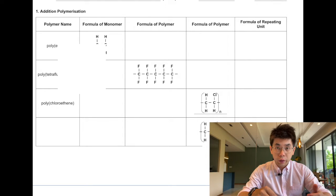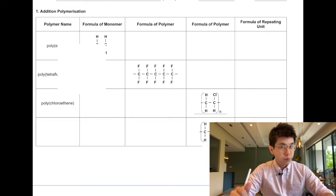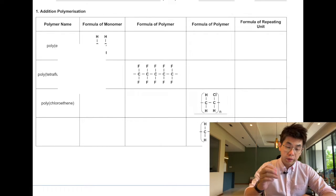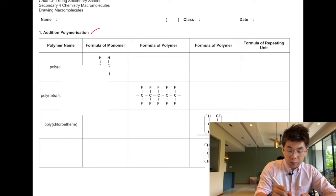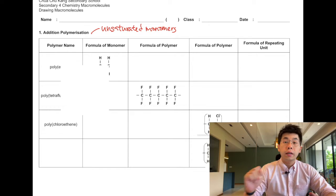Hello everyone, in this video we'll be looking at how to draw addition polymerization. We have previously learned that addition polymerization must occur for unsaturated monomers, which indicates that the monomer contains the C double bond C.